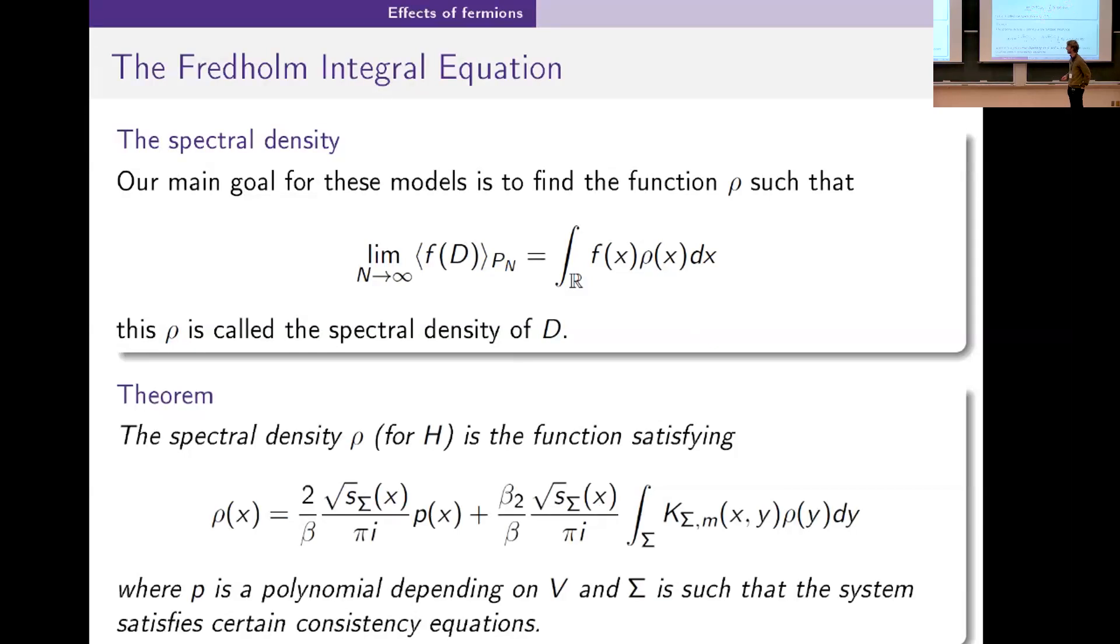You can do a bunch of analysis and show that this guy actually exists. We did this and the spectral density in terms of H. So here it's written in terms of D. In terms of H it's slightly different, but if you know the spectrum of H you can compute the spectrum of D. That's some relatively elementary linear algebra. So if we know the spectral density for H we've solved our problem.